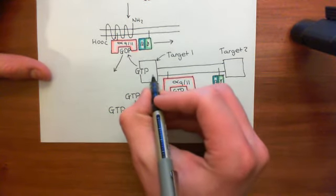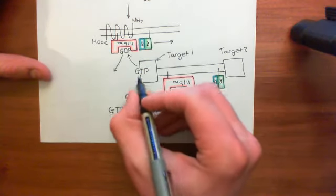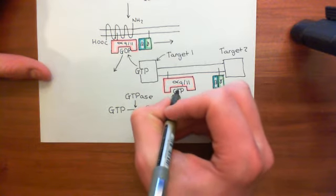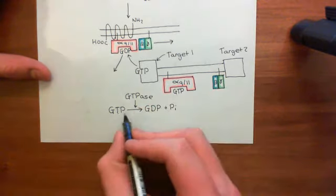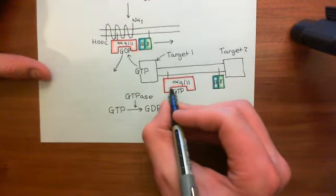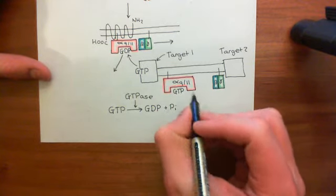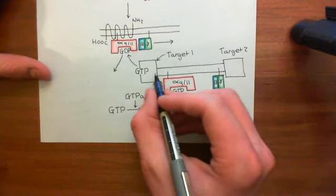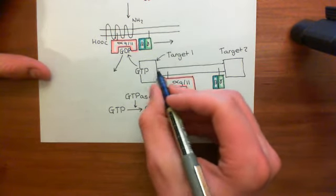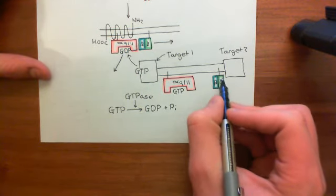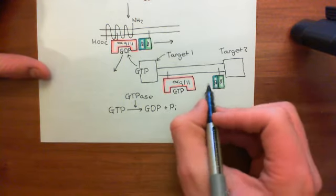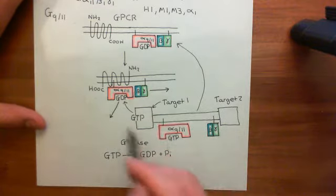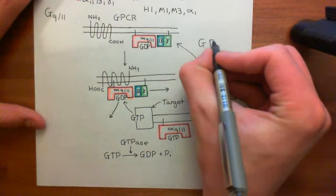When the alpha subunit binds to its target, it will activate, inactivate, or otherwise affect the target, but the target will also activate the GTPase activity of the alpha subunit. The alpha subunit will then hydrolyze the GTP down to GDP; the GDP remains bound to the alpha subunit while the inorganic phosphate is released into the cytoplasm. The alpha subunit has effectively turned itself off, cleaves away from target one, goes back to the beta-gamma complex, snatches it from target two, and reforms the heterotrimeric G protein in the off state. This is why it's called the G-protein cycle.